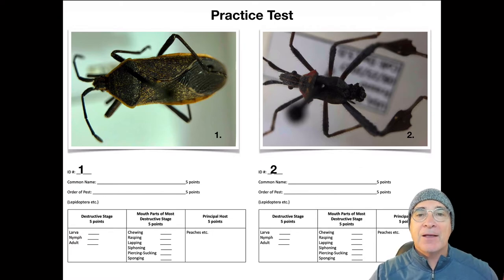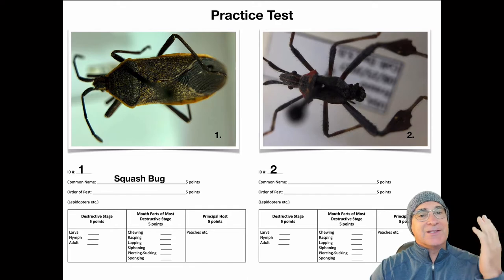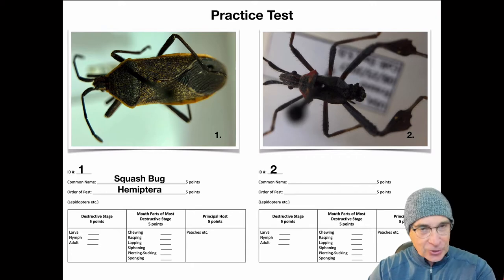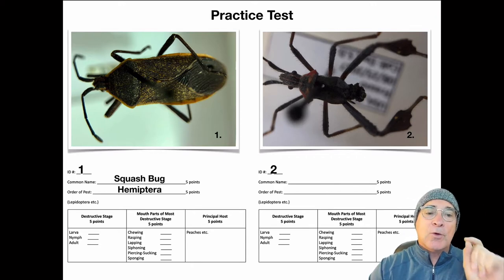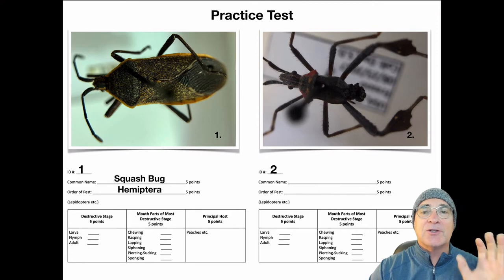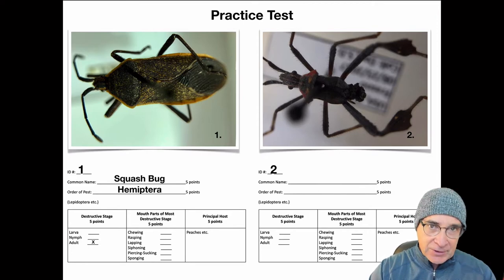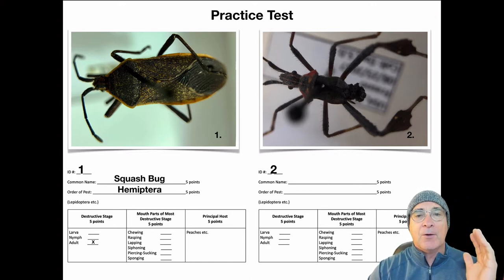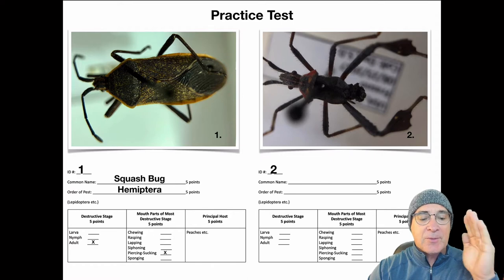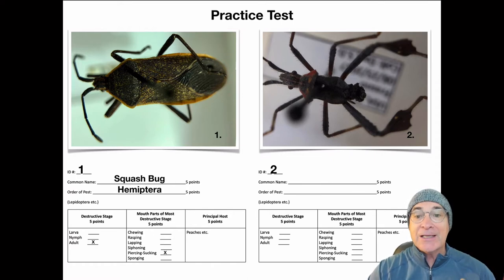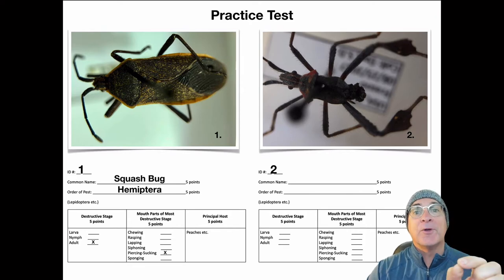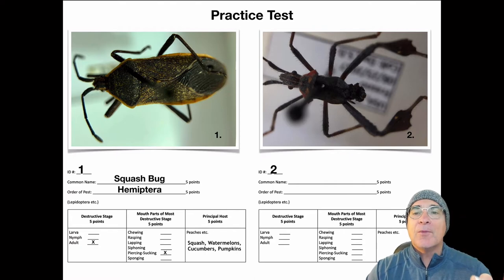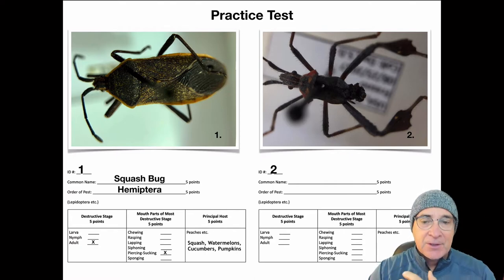Now that I'm back, let's take a look at number one. You should have got this one — it's definitely the squash bug. And then Hemiptera is going to be the order, which should go without saying because of what this video is all about. We're showing the adult form, so you put the X on adult. Mouthpart — slam dunk if you identified it in the Hemiptera order — it's going to be the piercing, sucking mouthparts. And then lastly, the principal host: cucurbits — watermelons, cucumbers, squash, and pumpkins.